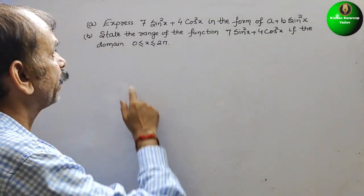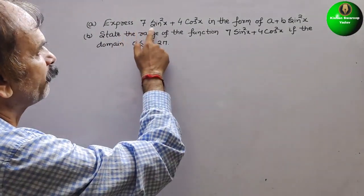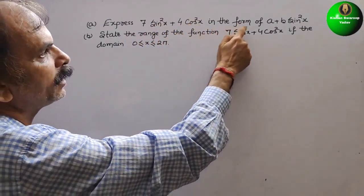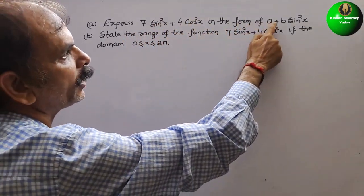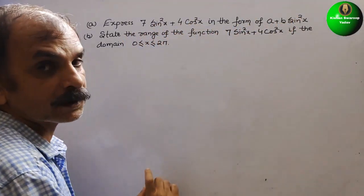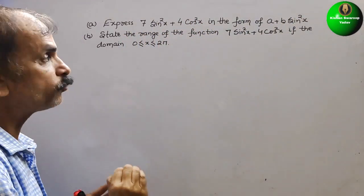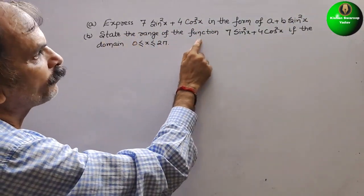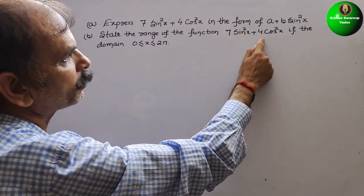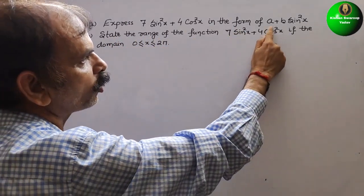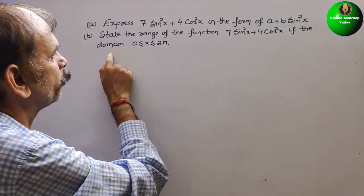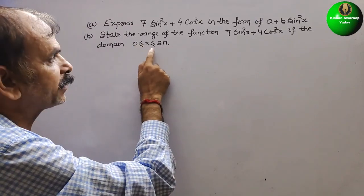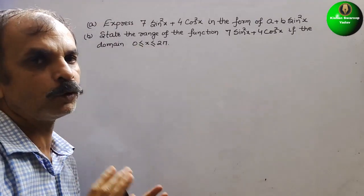The question asks you to express 7sin²x + 4cos²x in the form a + b·sin²x. Then, state the range of the function 7sin²x + 4cos²x if the domain is 0 ≤ x ≤ 2π.